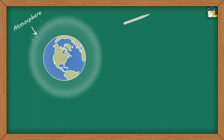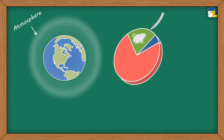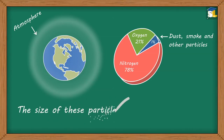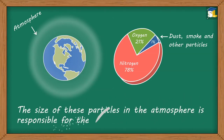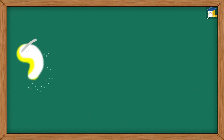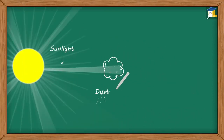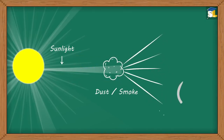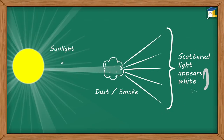We know that our atmosphere primarily consists of oxygen and nitrogen particles, along with dust, smoke, and other particles in comparatively smaller proportions. The size of these particles in the atmosphere is responsible for the color of scattered light. When the sunlight strikes particles of dust, smoke, etc., which are bigger than the wavelength of sunlight, all the colors of sunlight are equally scattered. As a result, the scattered light appears white.